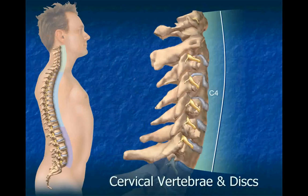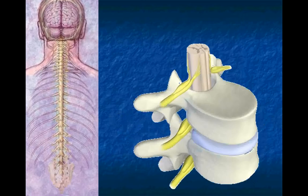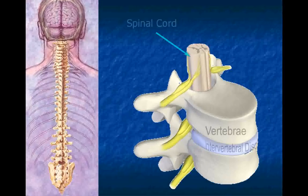Those vertebrae extend from the base of the skull to the upper back. The vertebrae are individual bones attached to each other by a multitude of small ligaments and spinal facet joints. The spinal vertebrae surround and protect the spinal cord as it extends from the base of the brain through the spinal canal to the base of the spine.